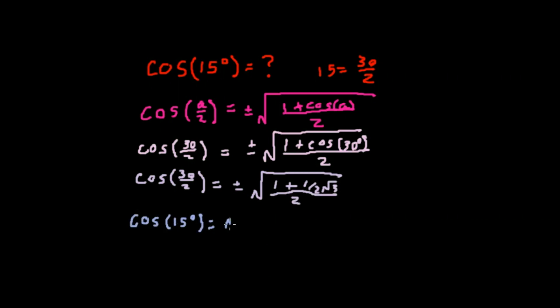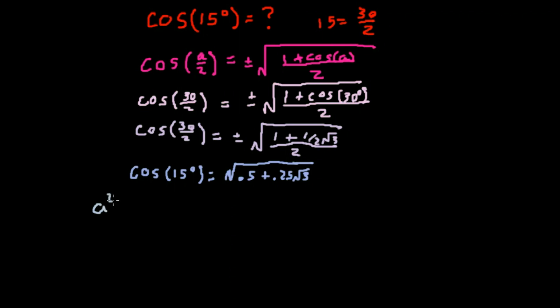Now while this is actually true, there's a way we can simplify this further. If we remember how to square the sum of two numbers, a plus b squared, that's a squared plus 2ab plus b squared. In this case, 2ab is going to be 1/4 of the square root of 3, and a squared plus b squared is equal to 0.5.